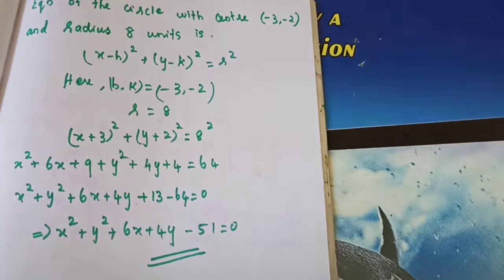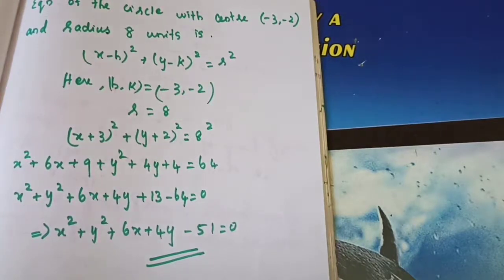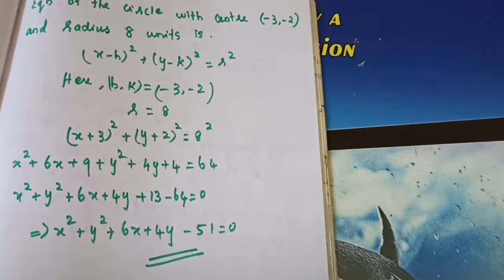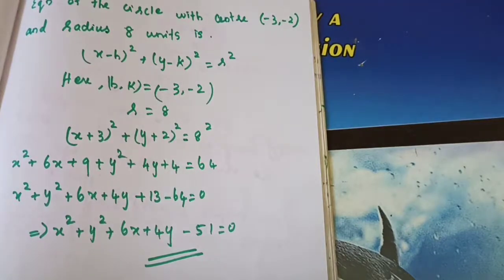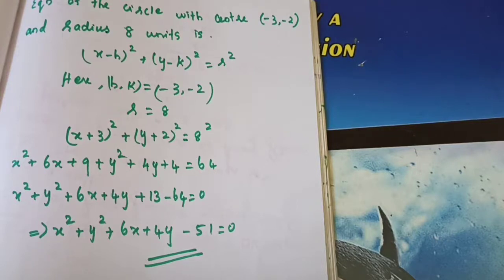I am moving somewhat faster because these problems you have completed in the examples — only a slight difference. The difference in this problem is circumference. The circumference of a circle formula is 2 pi r. We use that formula to find the r value. If the equation is given, you find the center as (minus g, minus f). Here h comma k — the center point is given — so we use x minus h squared plus y minus k squared equals r squared.